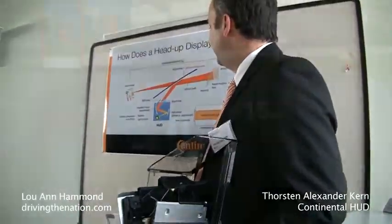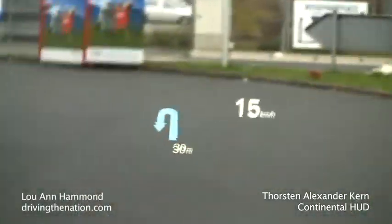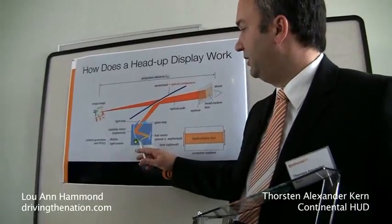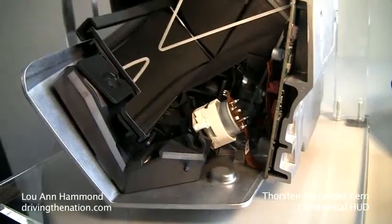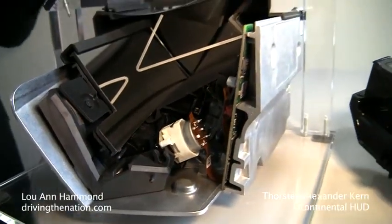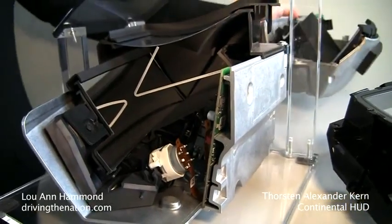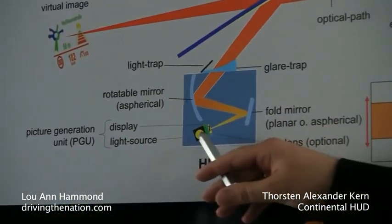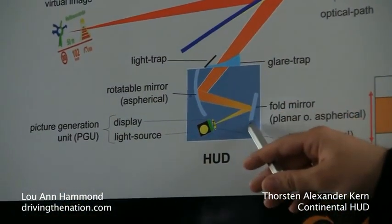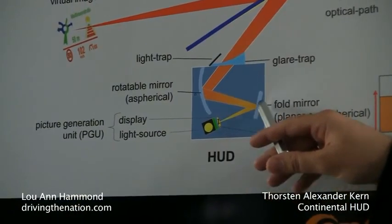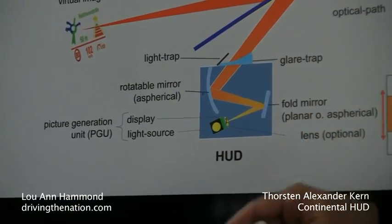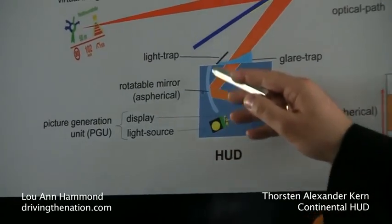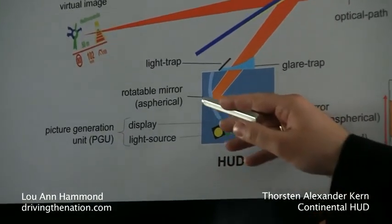The general function of a head-up display is more or less the same in any situation. It starts with a light source, called the picture-generating unit, with a display on top where the image is generated. Then the light goes to the so-called fold mirror. The fold mirror is only there to reduce the package size. Then it goes up to a rotatable mirror.